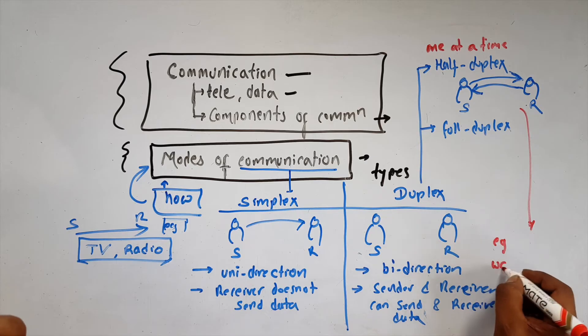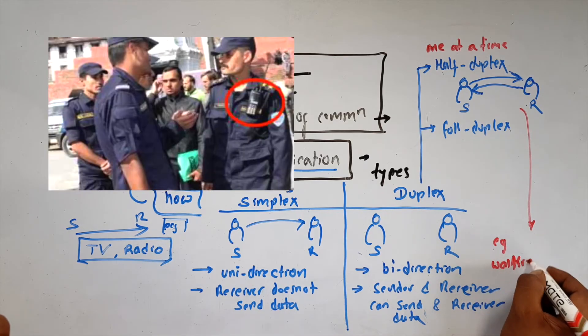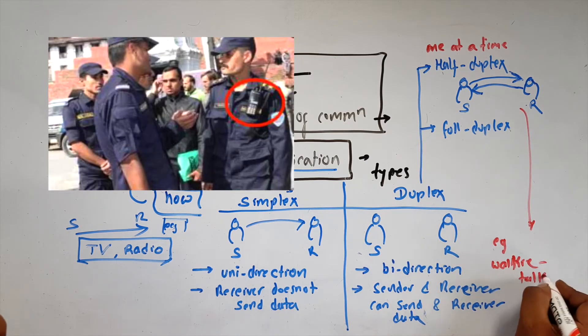The best example of half-duplex is walkie-talkie. Walkie-talkie is a classic example of half-duplex communication.